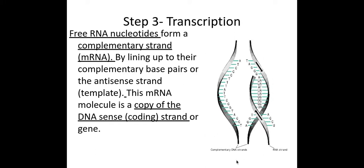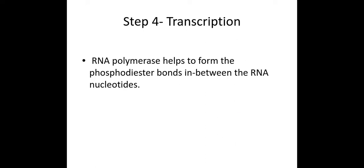Now this mRNA that's being formed here is going to be a copy of this DNA or coding strand, this sense or coding strand. So once my free mRNA nucleotides have lined up along the complementary base pairs, I then get the enzyme RNA polymerase that comes along to help to form those three to five prime phosphodiester bonds between the RNA nucleotides.